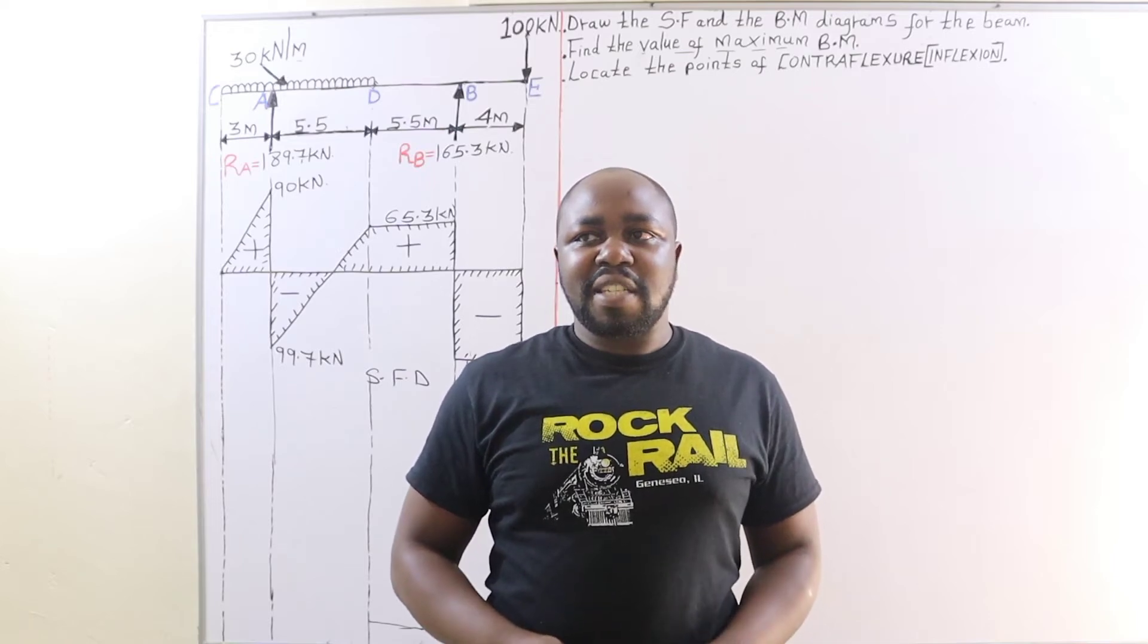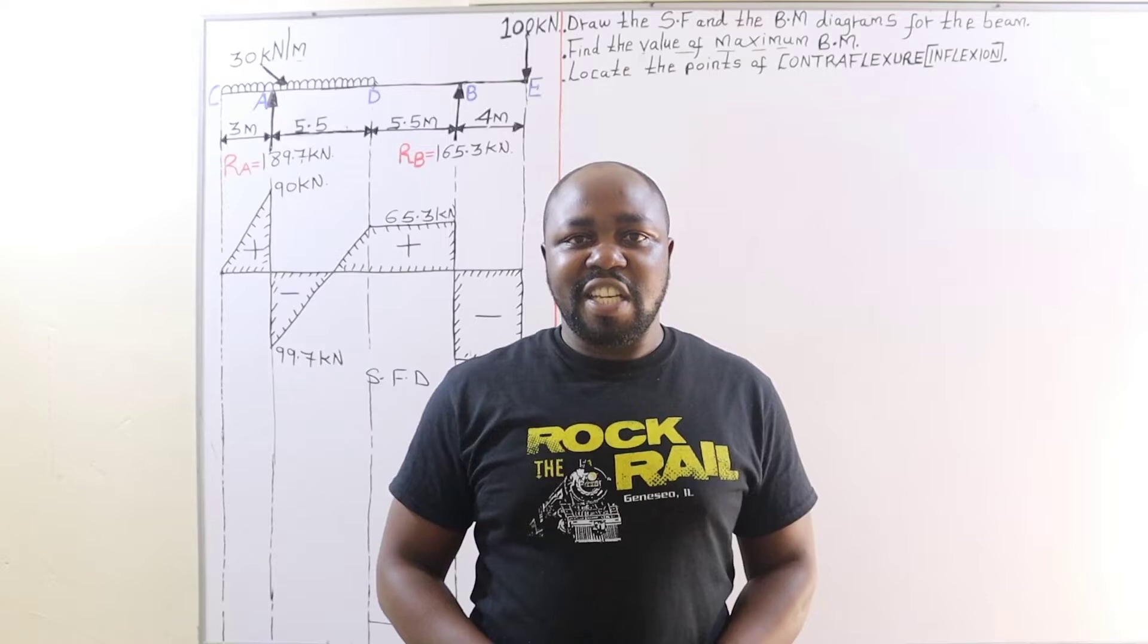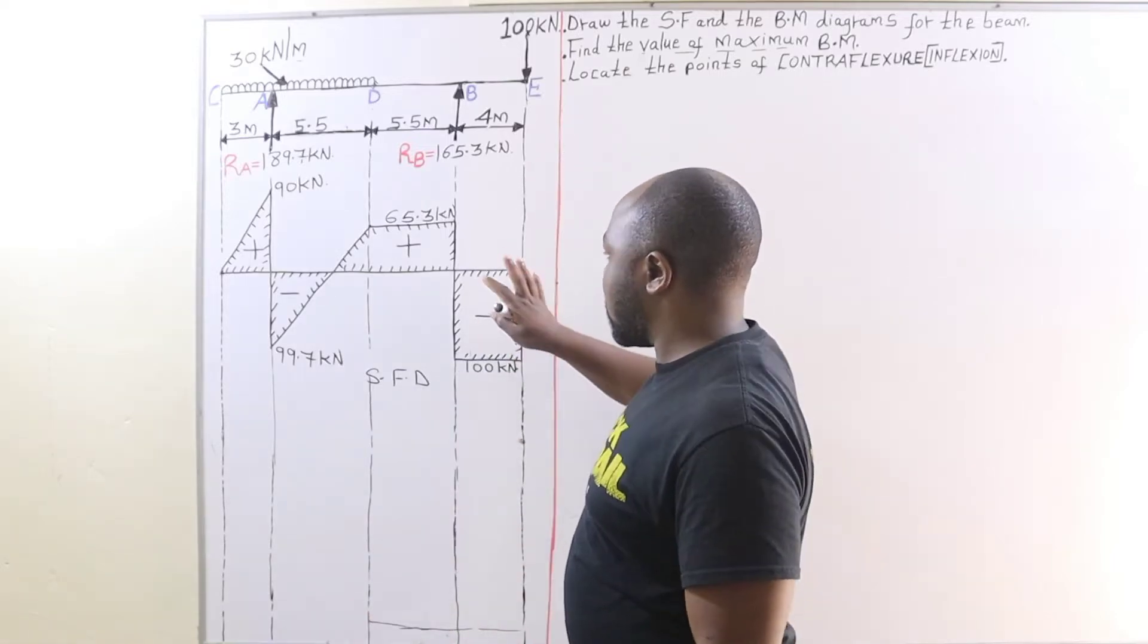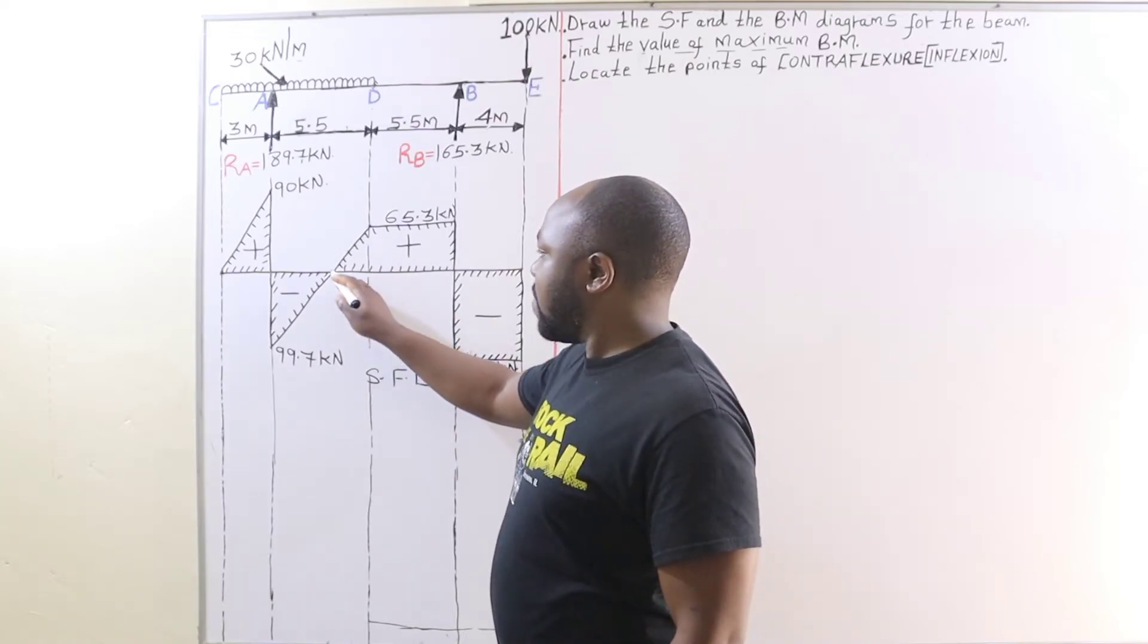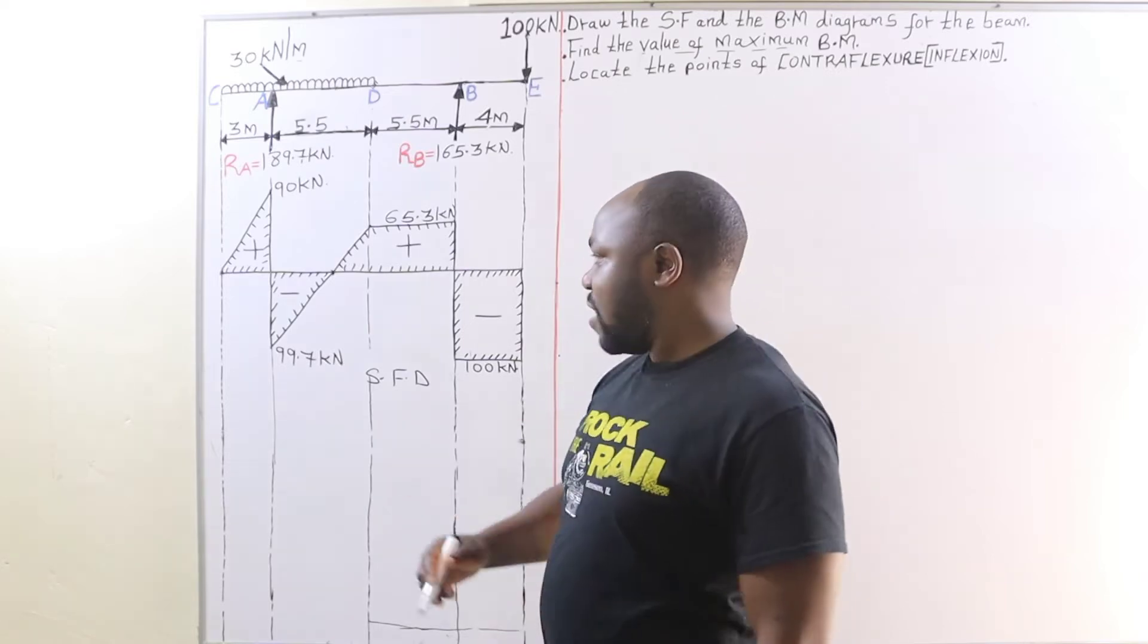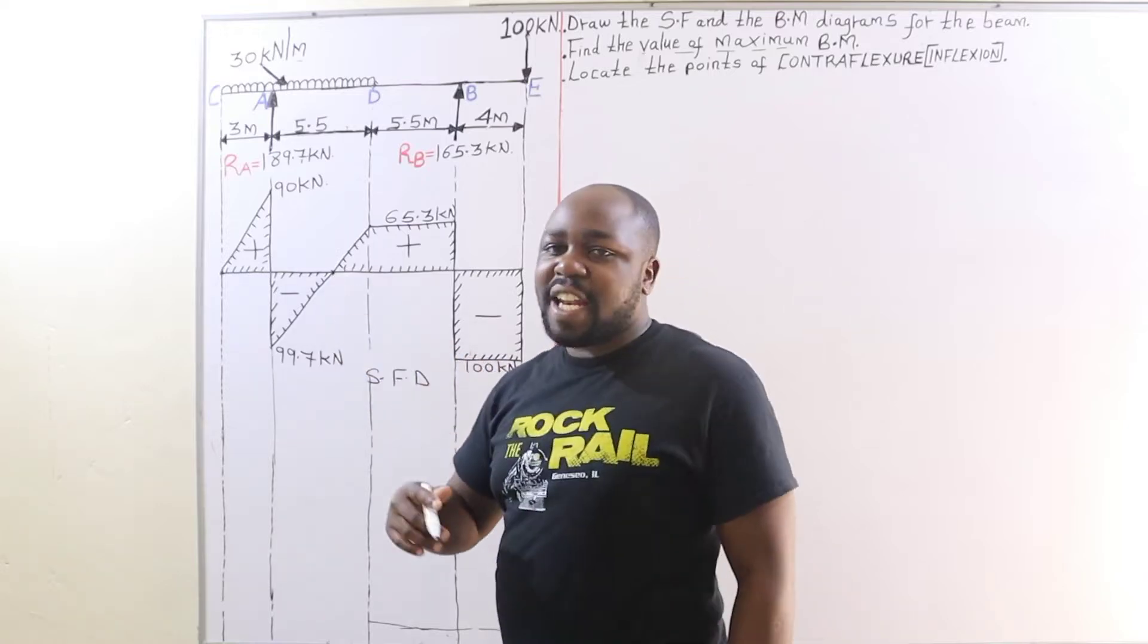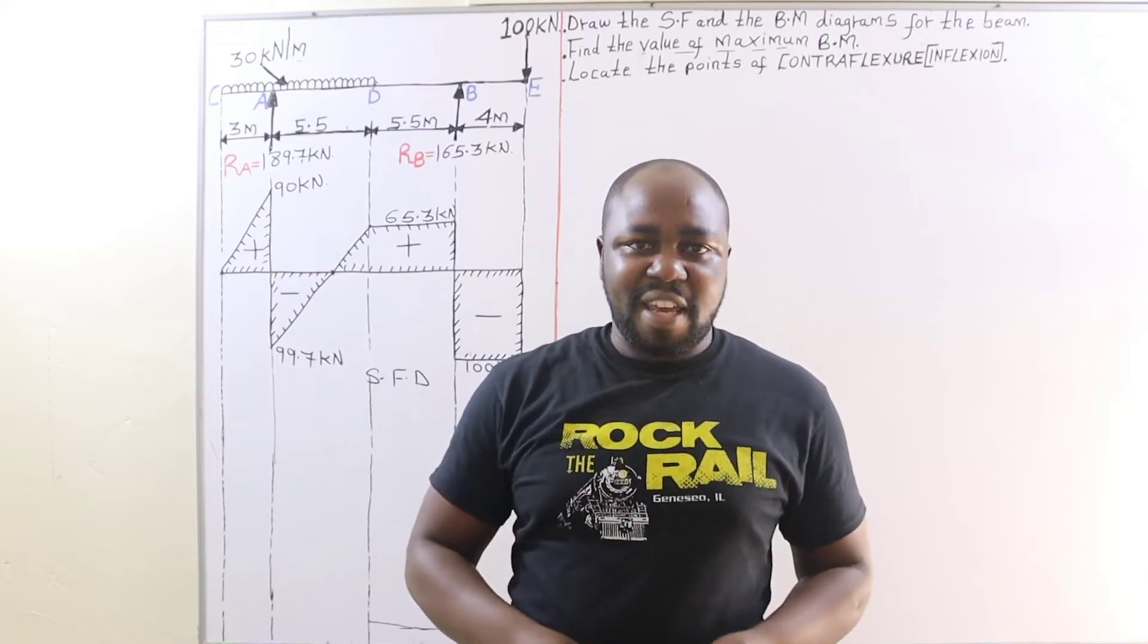Remember, moment is usually maximum when shear force is zero. And when we look at our shear force diagram you will find that at this point shear force is zero. That means that since shear force is zero at this point, then bending moment is maximum there.